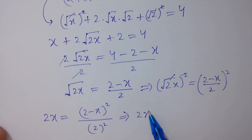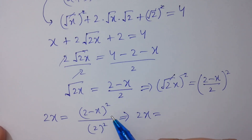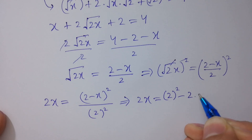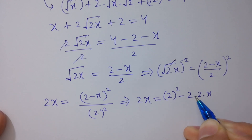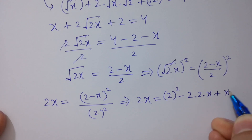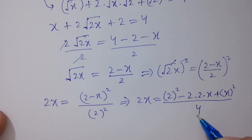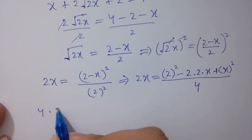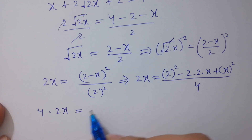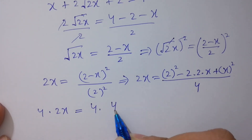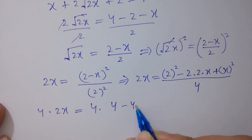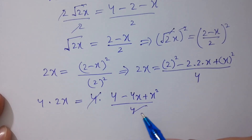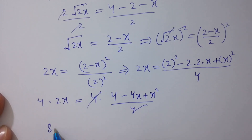2 minus x squared equals 2 squared minus 2 times 2x plus x squared over 2 squared, which is 4. Multiply by 4 on both sides: 4 times 2x equals 4 times the numerator, and 4 and 4 cancel. So 8x equals x squared minus 4x plus 4.